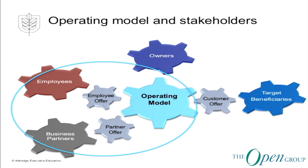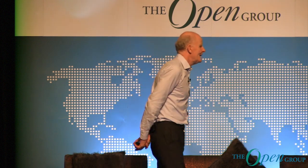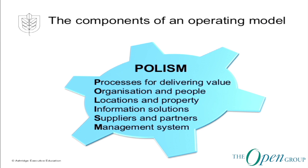A good starting point is to think about your stakeholders and determine which are customers and which are employees and suppliers — and that isn't always an easy task, as you may have people who are both customers and employees, so you may have to consider them wearing two different hats. What are the pieces of the operating model? I use a mnemonic, POLISM, starting with processes.